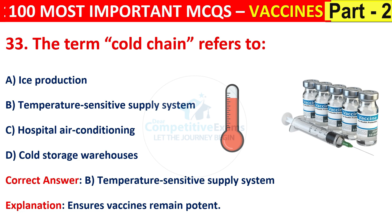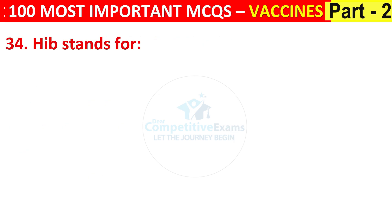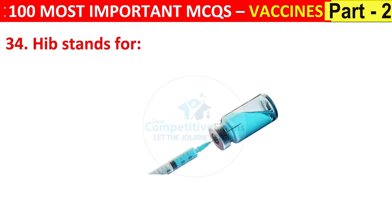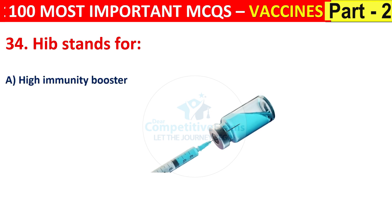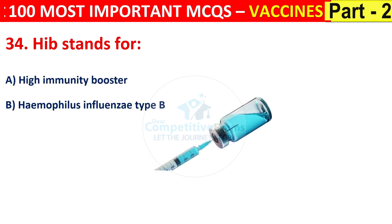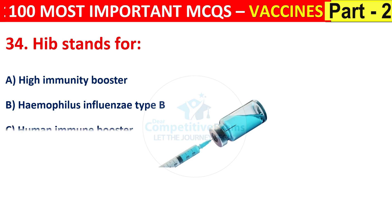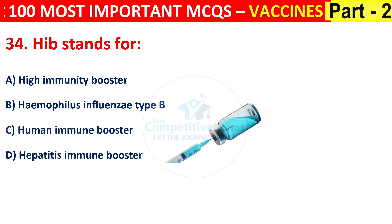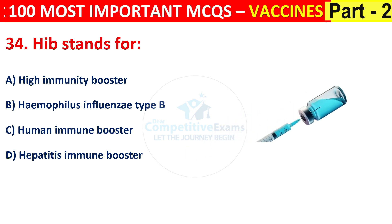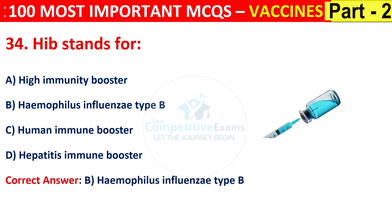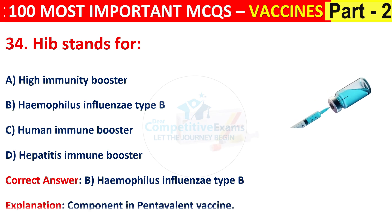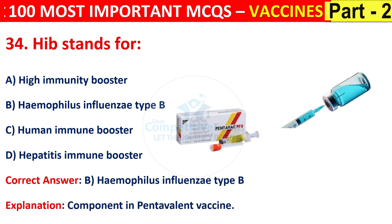Question number 34. The right answer is B, that is Haemophilus influenzae type B. It is a component in the pentavalent vaccine.